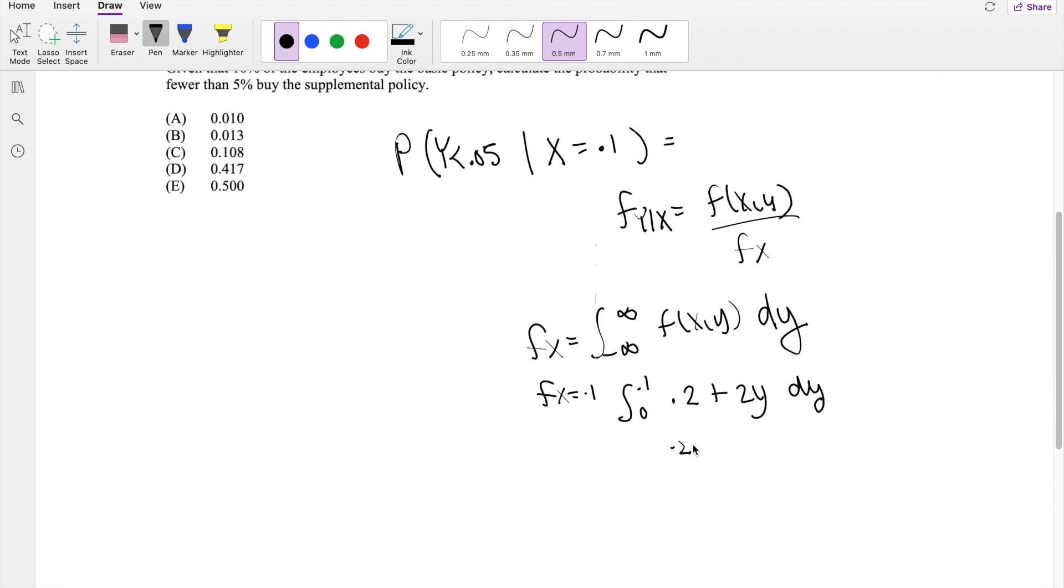When I integrate in respect to Y, you get 0.2Y plus Y squared, integrating from 0 to 0.1. The first term here is going to give you 0.02 plus 0.01, minus when I plug in 0, you get 0, so this is equal to 0.03.